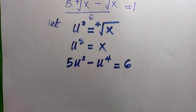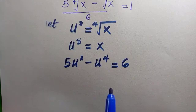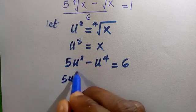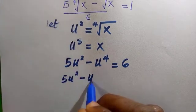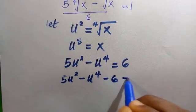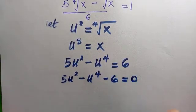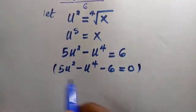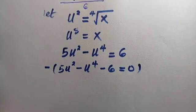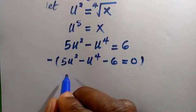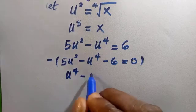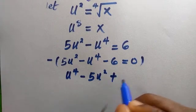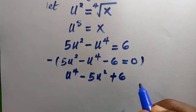Taking six to the left-hand side, we have five u² minus u to the power four minus six equals zero. Multiplying through by negative one to make the leading term positive, we get u to the power four minus five u² plus six equals zero.